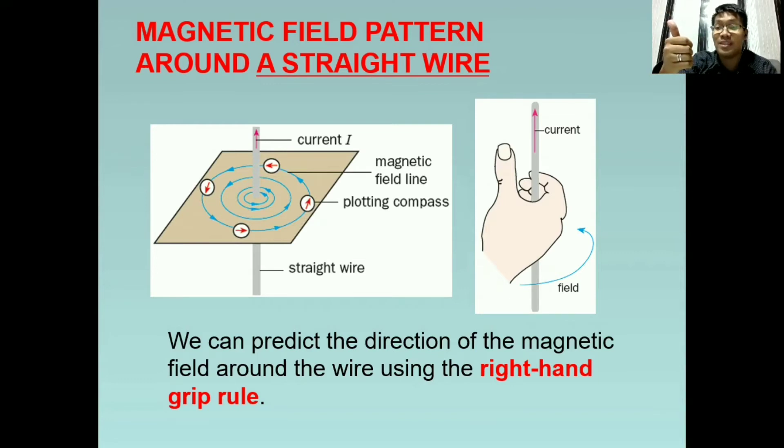Paano kaya kapag opposite or downward ang current? So, ipoposition natin ang thumb pababa. At may kitan ninyo na ang fingers natin ay magmumove clockwise. And that will be the direction of the magnetic field. So tatandaan ang right hand grip for a straight wire.